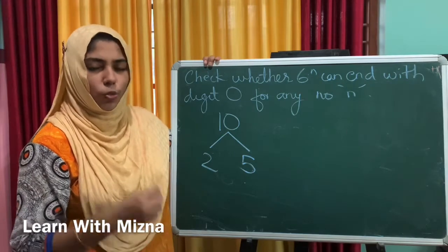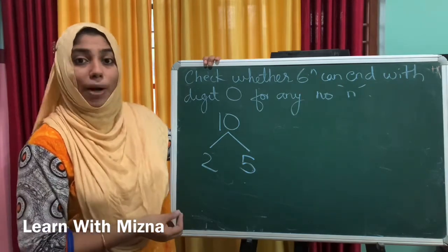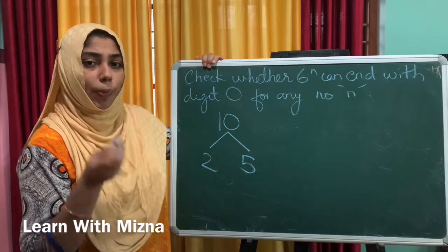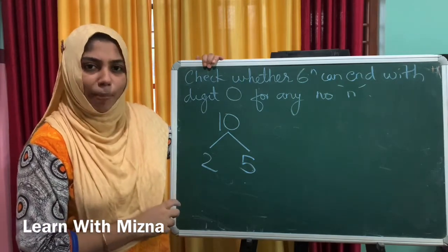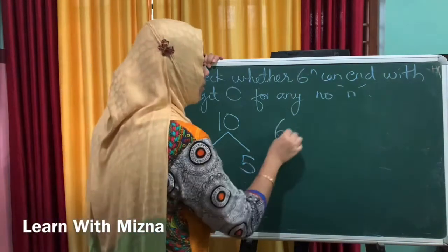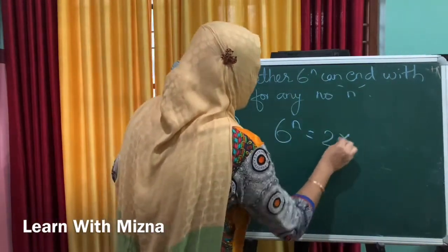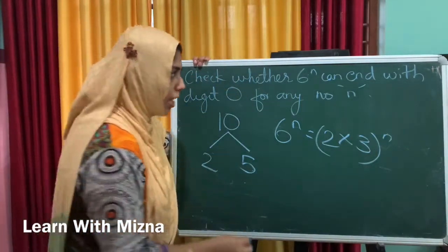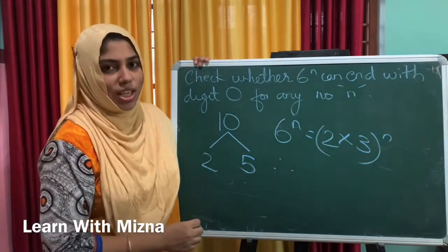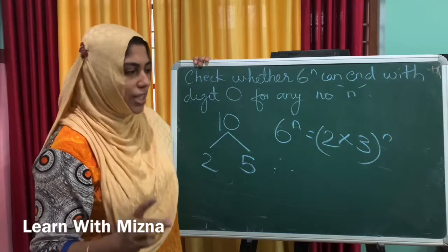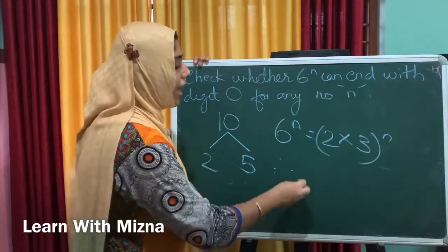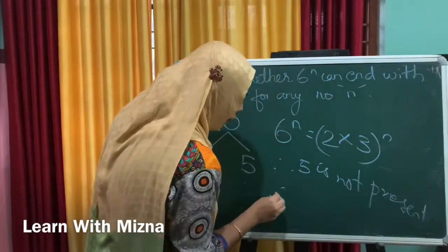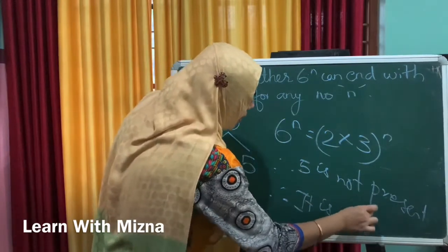2 and 3 are factors of 6. So 6 raised to n means prime factorization gives 2 raised to n into 3 raised to n. Therefore, 6 raised to n cannot end with 0, as the prime factorization of 6 is 2 and 3 raised to n, and 5 is not present. Therefore it is not possible.